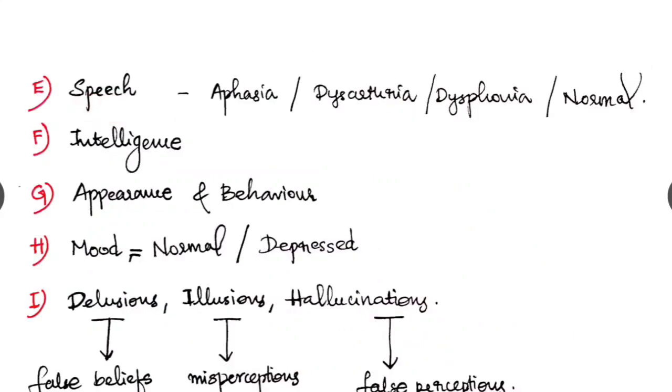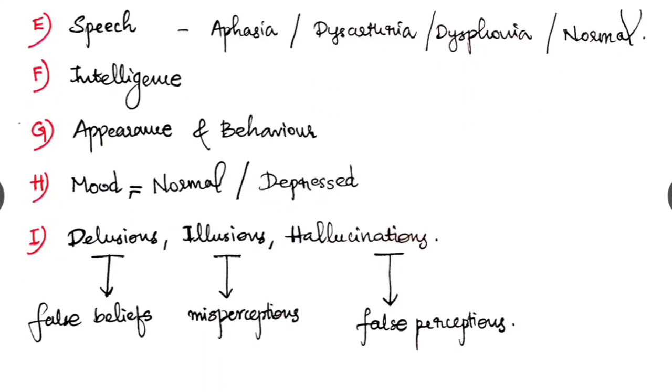Next is the speech. Speech, there can be abnormalities like aphasia, dysarthria, dysphonia or it can be normal. Next is intelligence based on the patient's educational status, appearance and behavior, mood whether he is normal or depressed and check whether there is any delusions, illusions or hallucinations.